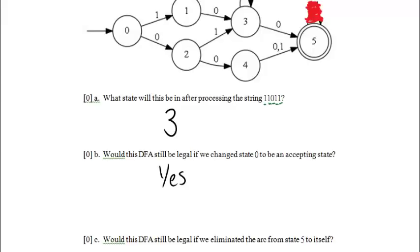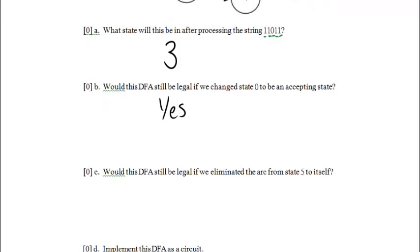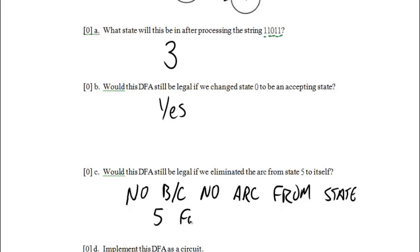And now we have a state, state 5, where for both inputs, for 0 and for 1, we don't have an output. We only need one of those for it not to be legal. And both of those, well, I guess it doesn't make it any more not legal, but it's definitely not legal. So the answer is no. This DFA would not be legal if we eliminate that arc. So, like I said, there just has to be one state input combination for which there's no arc for it not to be legal, but there's actually two. So it's not legal for two reasons.